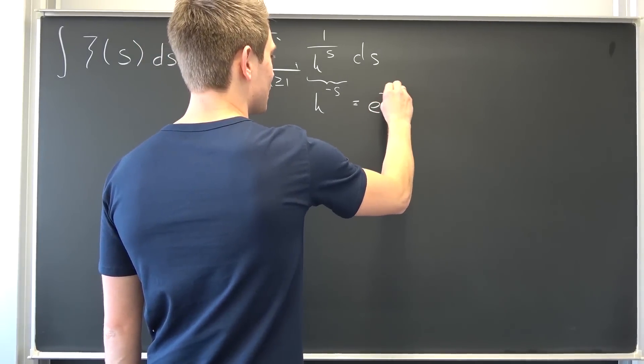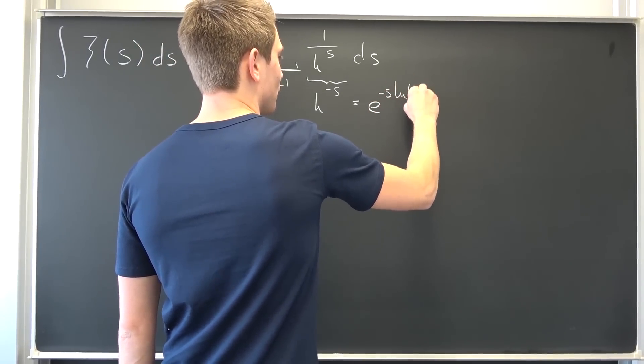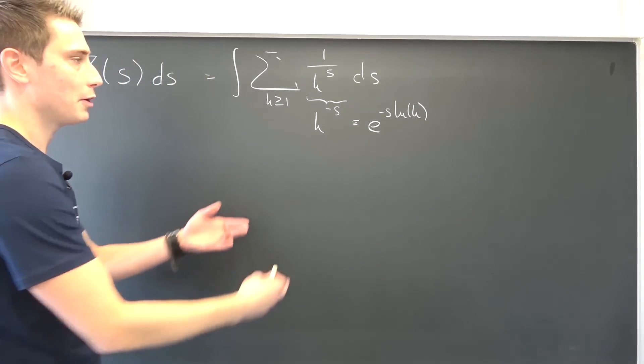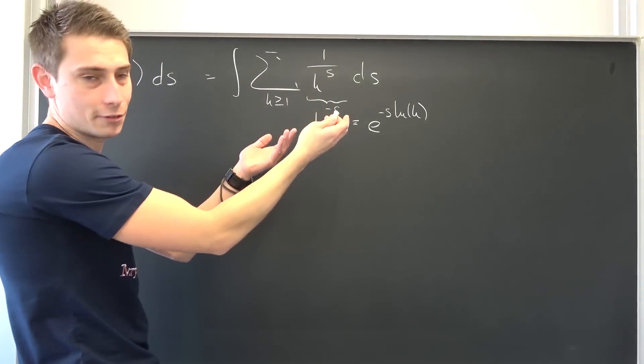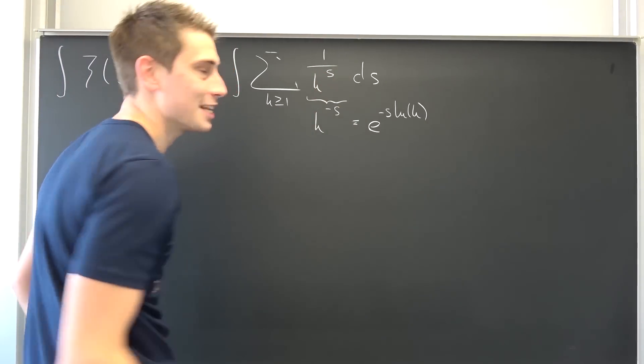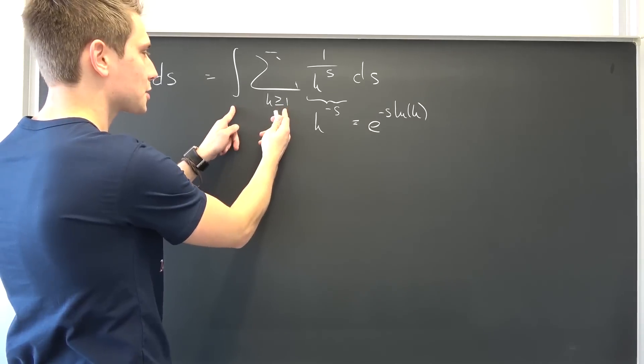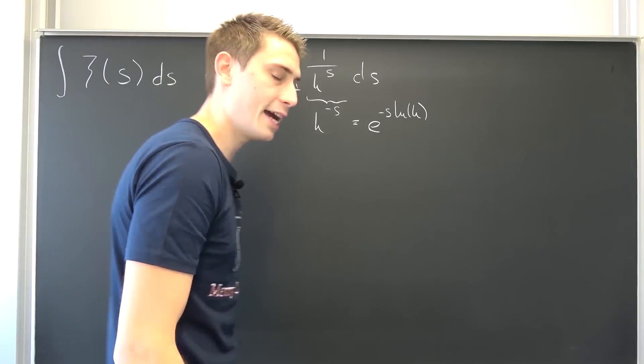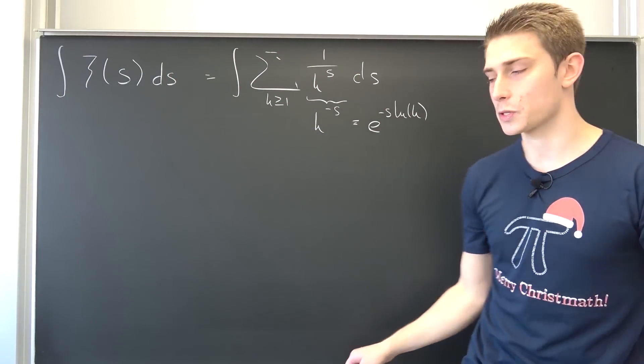So, this is the same as e to the negative s natural log of k. I hope you agree with me. Now, we have a new definition basically of 1 over k to the s power. Also, we are going to interchange those two limits, integral and summation.